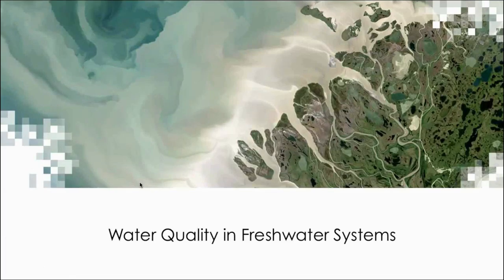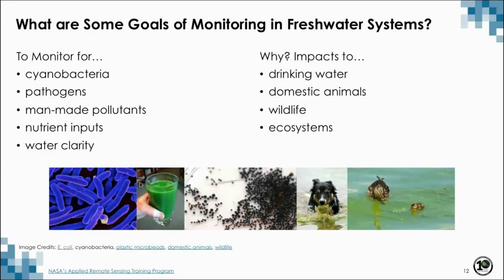Let's talk a little bit more about water quality and freshwater systems. What are some of the goals of monitoring in freshwater systems? Some goals may be to monitor for cyanobacteria, pathogens like E. coli, man-made pollutants, excess nutrient inputs, and water clarity. Why might one want to monitor for these? Some examples are to understand impacts to drinking water systems, to water available to livestock and other domestic animals, impacts to wildlife, and to the entire ecosystem.